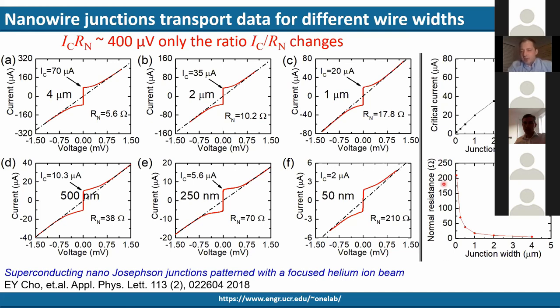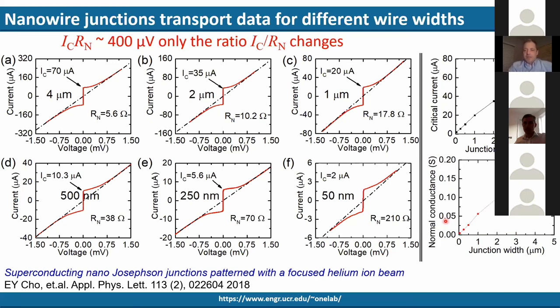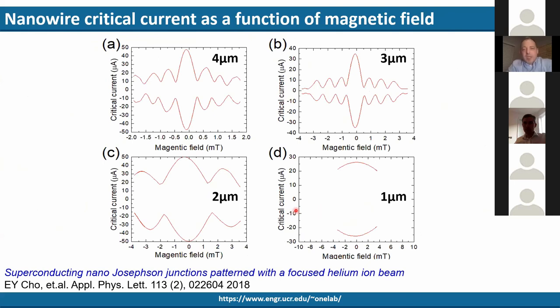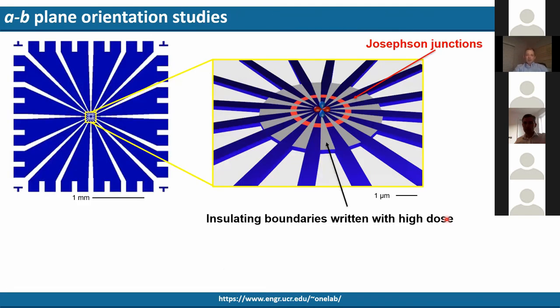Now the normal resistance is shooting up as you'd expect, but the right variable is the normal conductance, because that's going to change as you change the size, any kind of dimension. And that's also linear. So this really gives us confidence that the beam can really reach down to these small dimensions to pattern devices. And this shows the magnetic field dependence for up until the one micron device, because the magnetic field strength of our coil inside of our Josephson junction probe doesn't go that high.